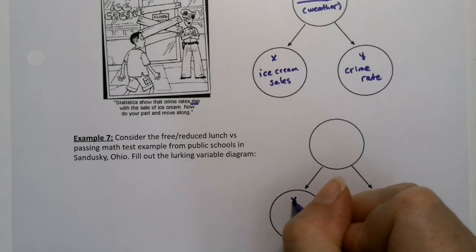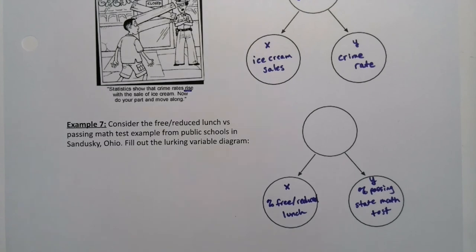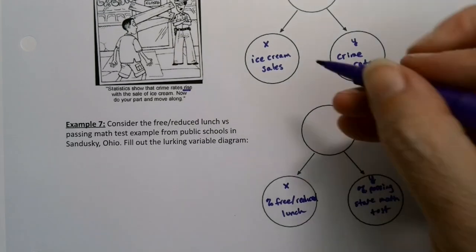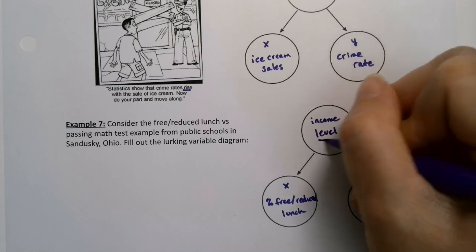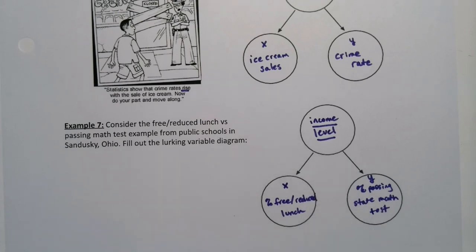Alright, now what about our free reduced lunch example? So we had X which was the percent on free or reduced lunch in a school, and then we had the percent passing the math tests, passing that state math exam. And that's Y. So we needed another variable that affects both of those things. That's a lurking variable. So a lurking variable should affect both of these things. And income level or poverty level, whichever way you want to think about it, definitely affects both of those things. So income level affects whether a child needs free reduced lunch. It also affects their ability to pass math tests. That's been shown many many times over, that K-12 students that have lower income levels tend not to pass math tests for a variety of reasons. It's not because they're not intelligent, it has to do with their stress levels at home and things like that, their ability to study, the time on task, things like that.